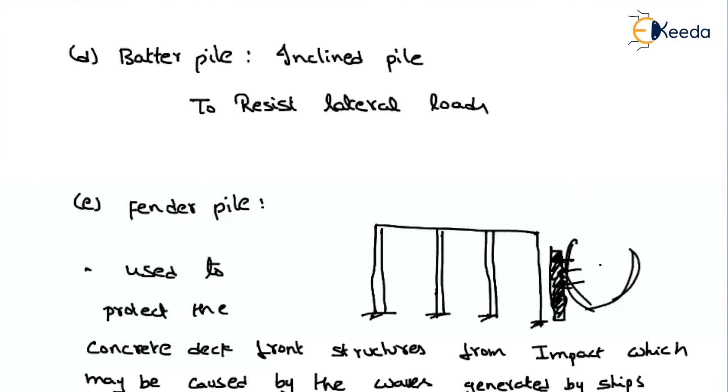For the transfer of goods, we will construct some concrete decks here. We will transfer the goods or manpower through this deck. As the ship is in the sea level, because of the waves generated in the sea, this ship will try to impact the concrete deck. If we keep on impacting, the structure may fail. To avoid that impact, we will construct a pile just in front of the concrete deck. That pile is called the fender pile.